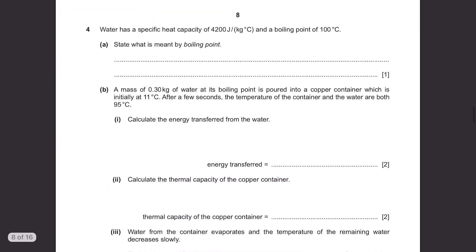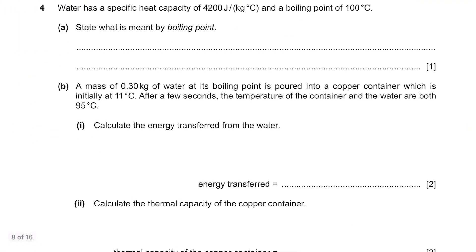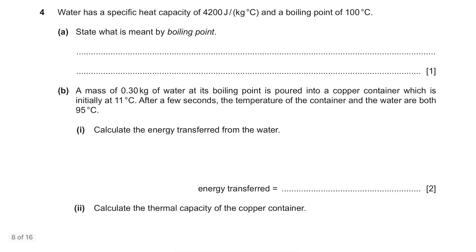Question 4. Water has a specific heat capacity of 4200 joules per kilogram degree Celsius and a boiling point of 100 degree Celsius. Part A. State what is meant by boiling point. Just the definition, it's temperature at which liquid turns into gas. You must mention the word temperature.